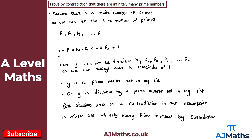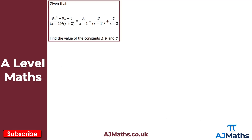That gives the solution to question three. Finally, question four is another partial fractions question. We want to split the given fraction into partial fractions and find constants a, b, and c. Note that this question has a repeated factor — (x - 1)² — which makes things a little more complicated but not too challenging.